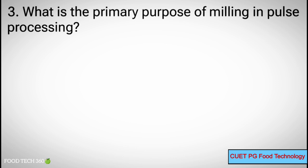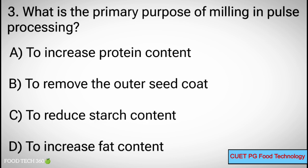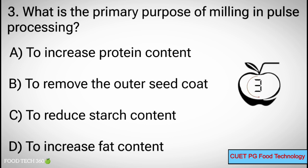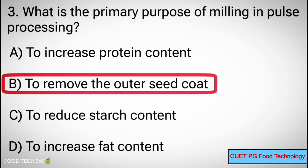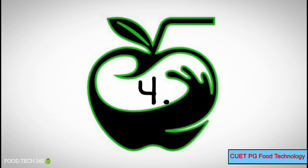Question number 3: Which is the primary purpose of milling in pulse processing? Options: A. To increase protein content, B. To remove the outer seed coat, C. To reduce starch content, D. To increase fat content. Correct answer: B. To remove the outer seed coat.